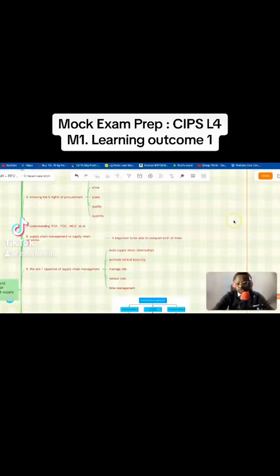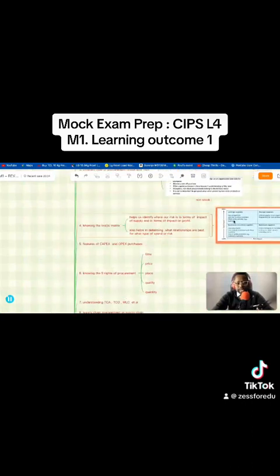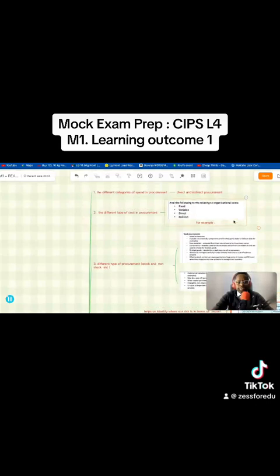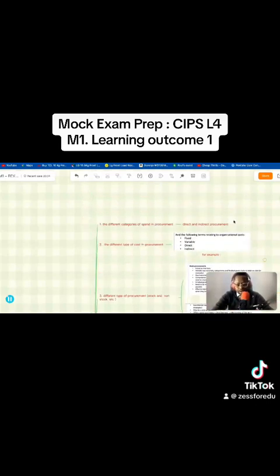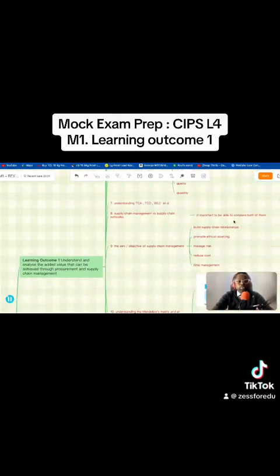All right then, testing one two three. Just briefly going over some areas you may want to look at in L4 M1 constructive response type questions. I'm looking at within outcome one: understanding and analyzing the added value that can be achieved through procurement and supply chain management.